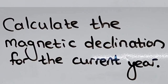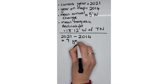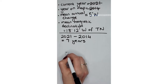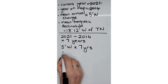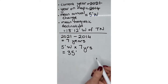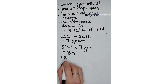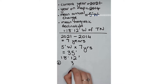We see that both of these are west, so already we know we are going to add. The question reads: calculate the magnetic declination for the current year. That means we take 2021 minus 2014, which gives us seven years. We now need to take our mean annual change and multiply it by seven years.